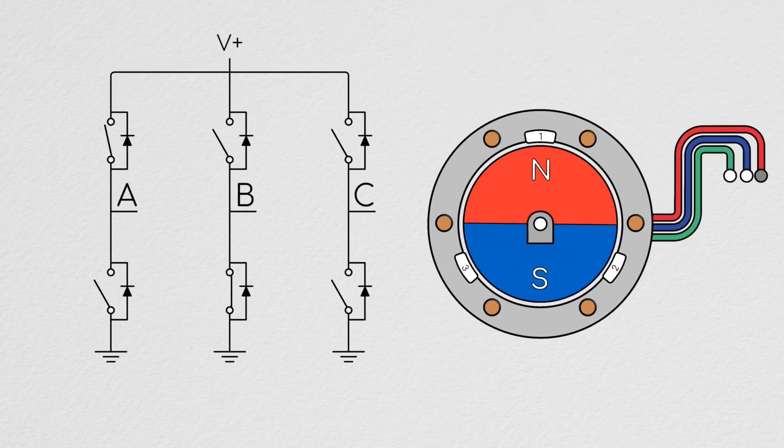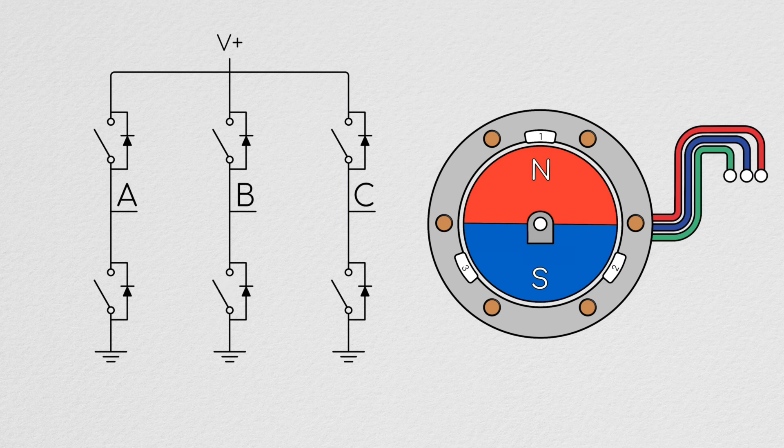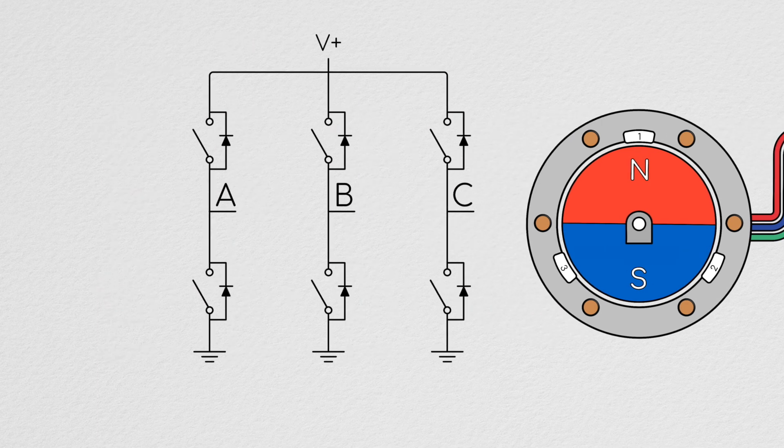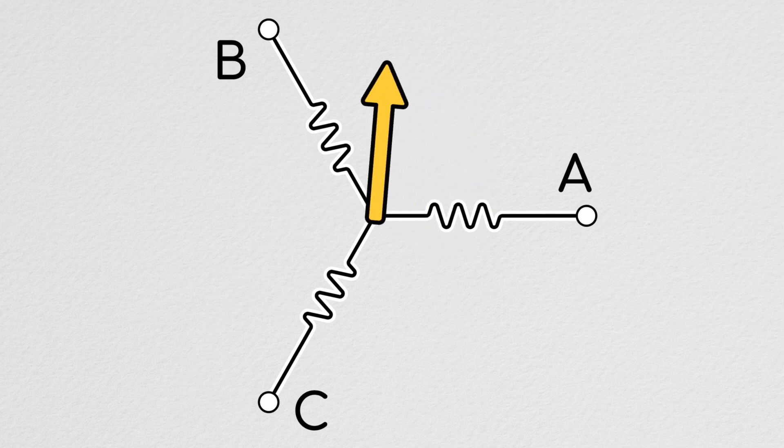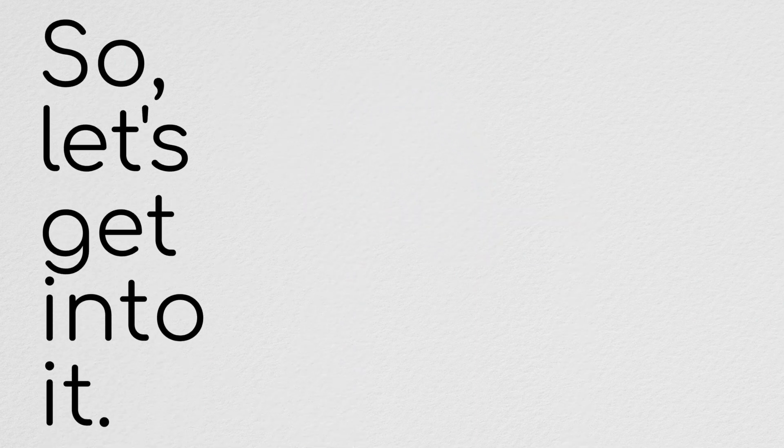Hi and welcome to Understanding Motors. Last episode we talked about how you can use a modified H-bridge to control a brushless motor's commutation. This time we're going to talk about how you can use it to modulate the current you send through your motor. So let's get into it.